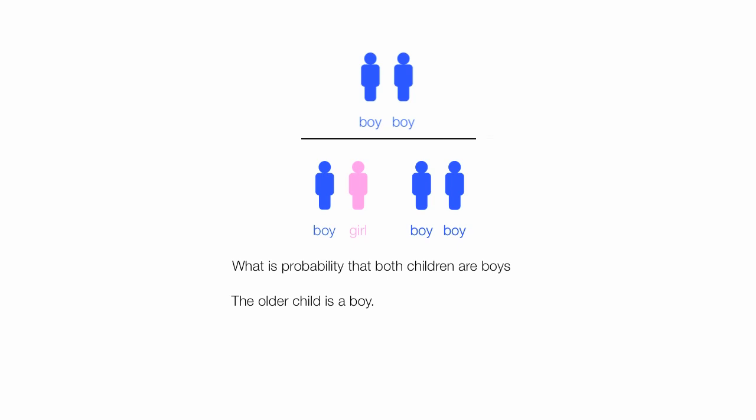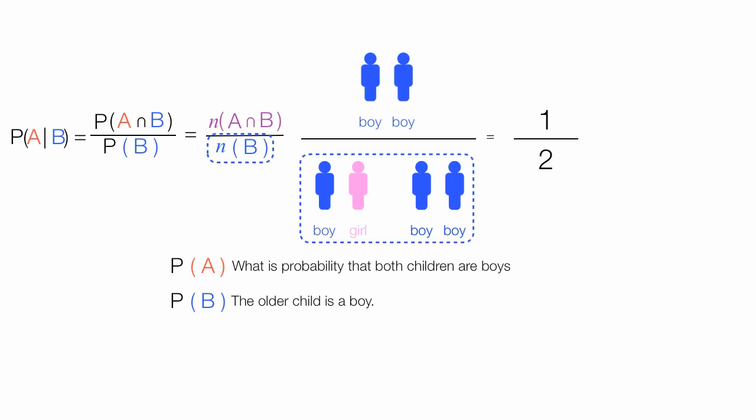This is equal to 1 half. Formally we write it like this. The denominator is the number of B's or the subset of B which is 2. And the numerator is just the number of the intersection which is 1 in this case.